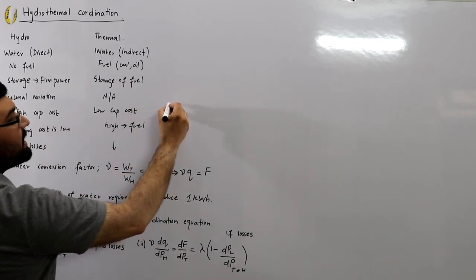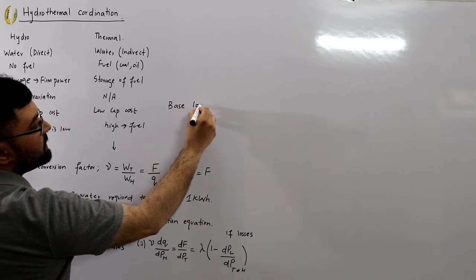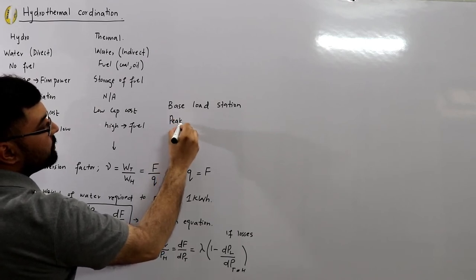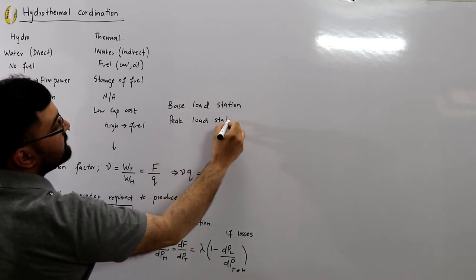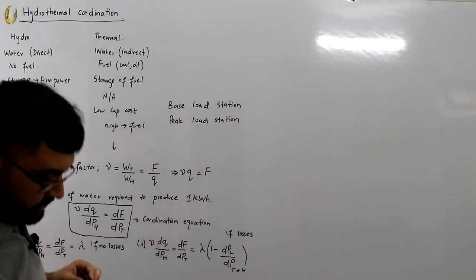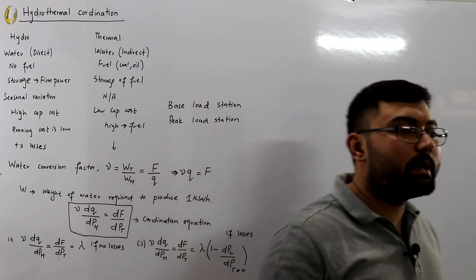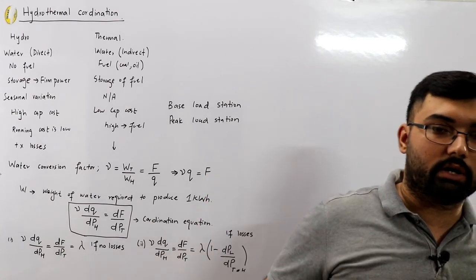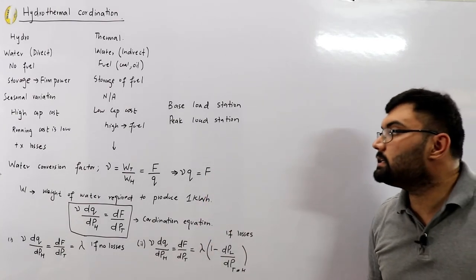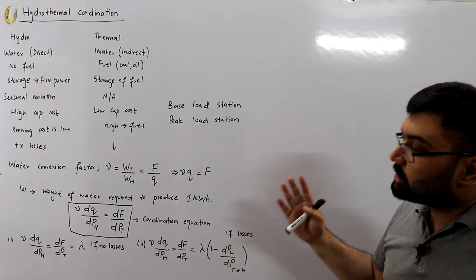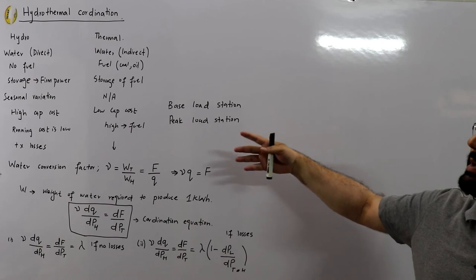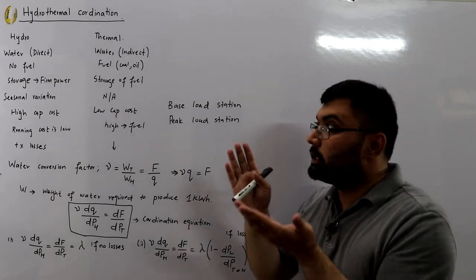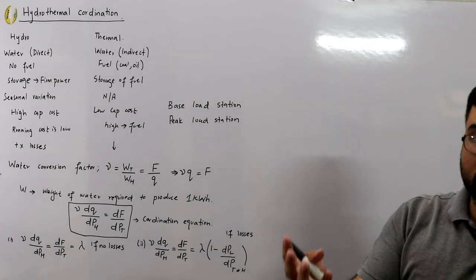We also have the base load station and the peak load station. The base load station runs continuously to provide the average or base load. The peak load station handles the maximum load occurring for a shorter interval during the load curve. The coordination must also specify which plant — hydro or thermal — acts as the base load station and which acts as the peak load station.